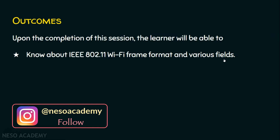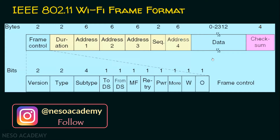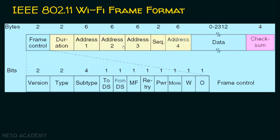Let's start with the 802.11 Wi-Fi frame format. If you observe, there are fields such as frame control, duration, address one, address two, address three, sequence, address four, data, and checksum. When we talk about the frame control field, it has subfields which include version, type, subtype, to DS, from DS, MF, RTRI, power, more, W, and O.